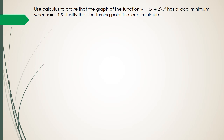So basically what we have is a function, and we've been told that it has a local minimum when x equals negative 1.5. We need to figure out and justify that the turning point is a local minimum. So f(x) in this case is equal to (x + 2) times x cubed. The first thing I want to do is differentiate this, but before I do that I need to expand the brackets.